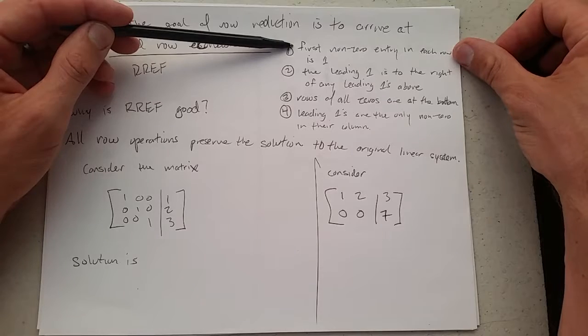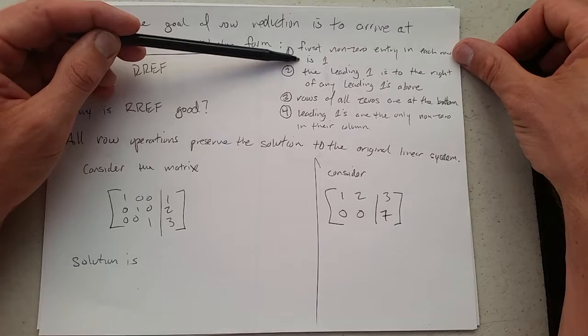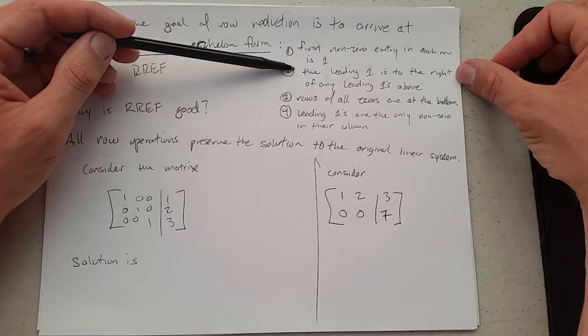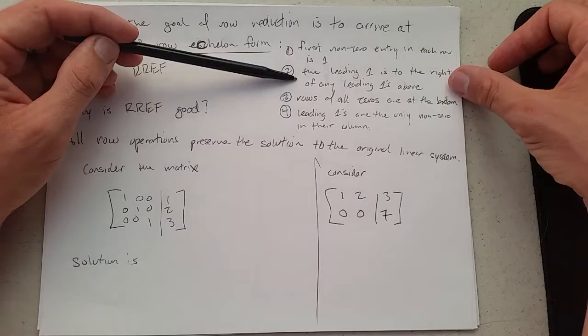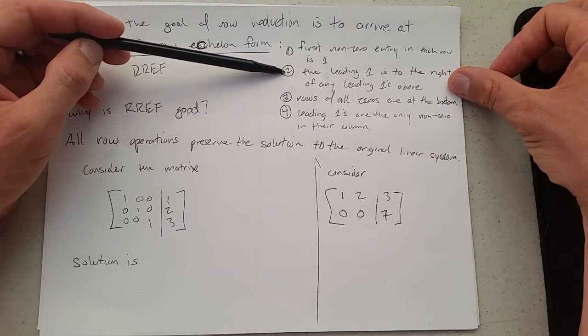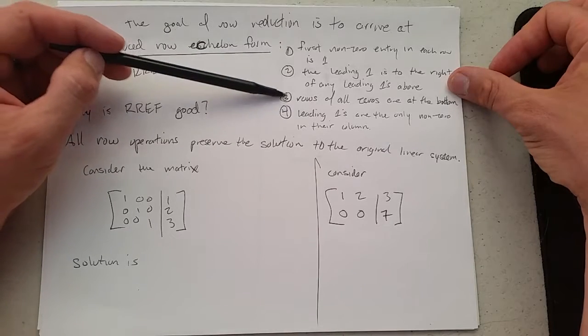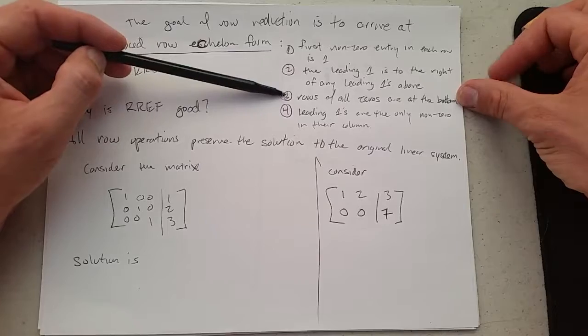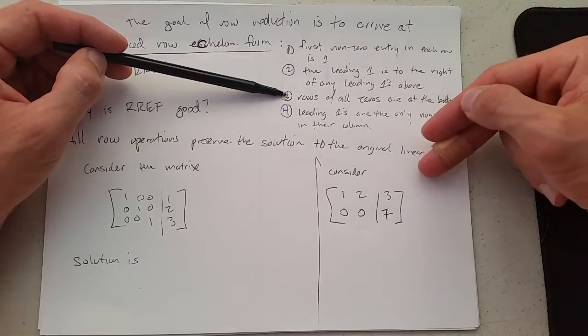The first non-zero entry in each row is 1, so that means the leftmost entry that's not 0 needs to be 1 in every row. The leading 1 is to the right of any leading 1's above it, which means it's going to go sort of like a staircase of 1's. Rows of all 0's are at the bottom, so if any of those useless 0 rows, you can use swaps to get them to the bottom.